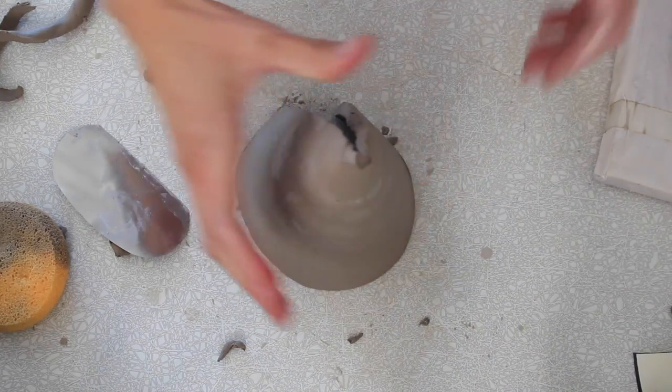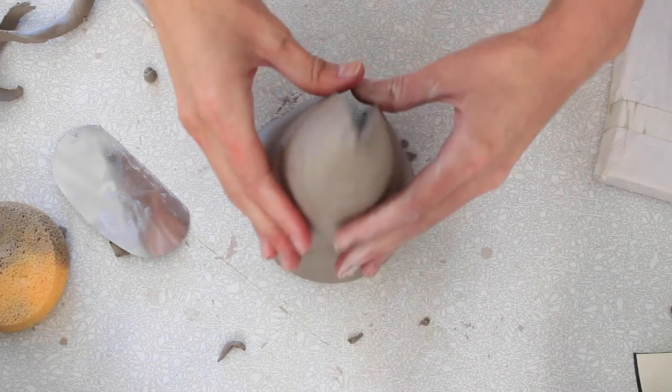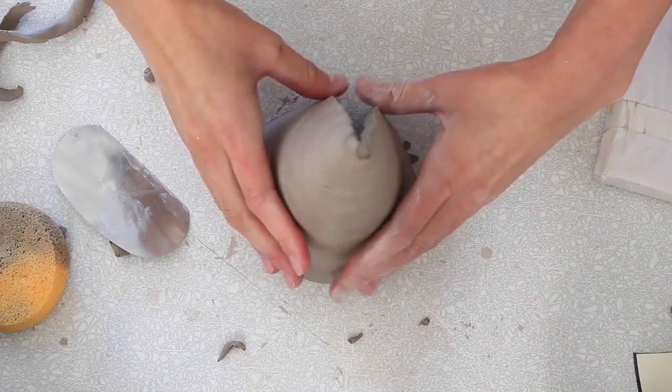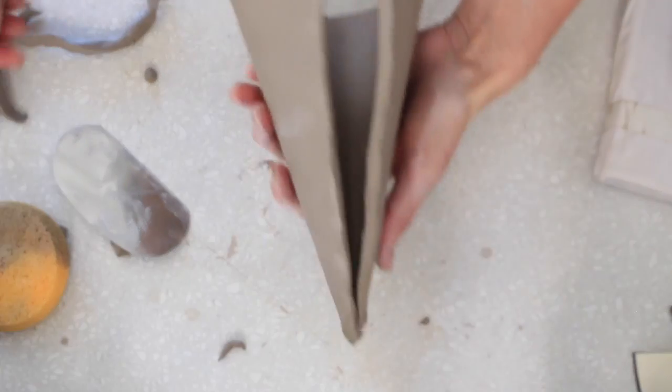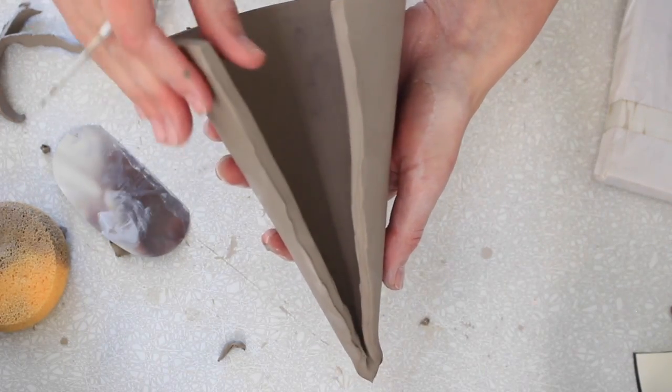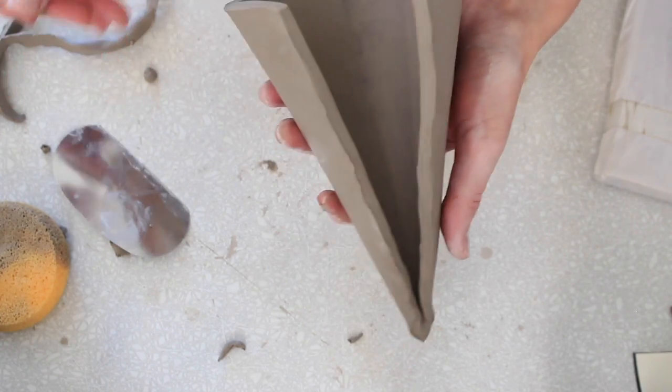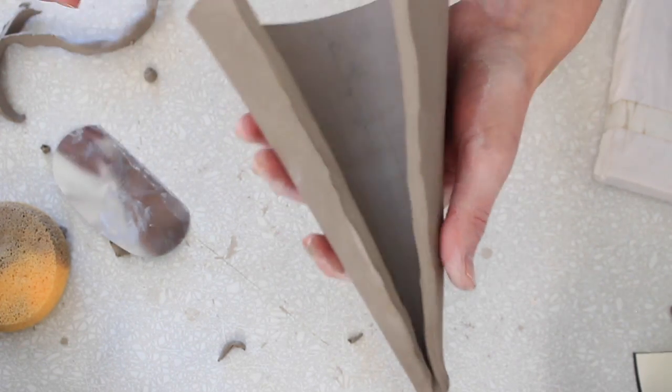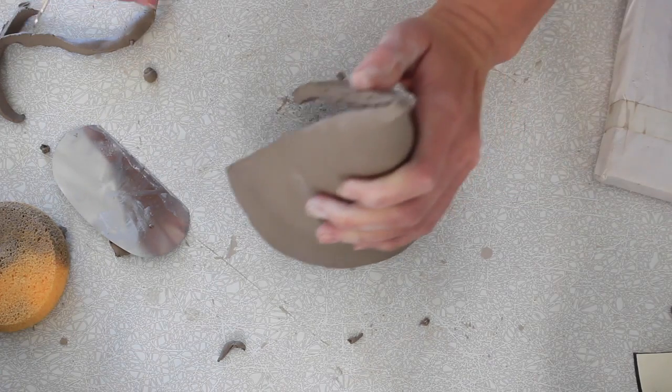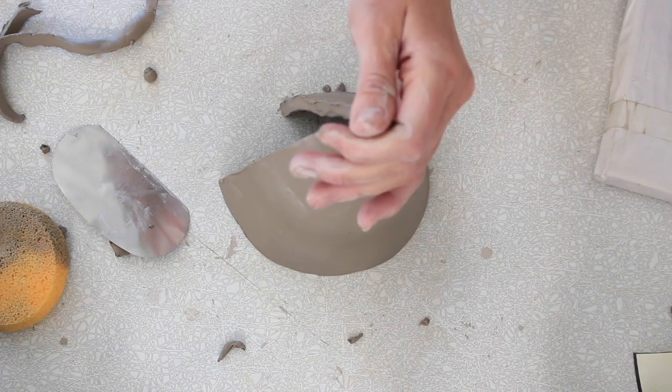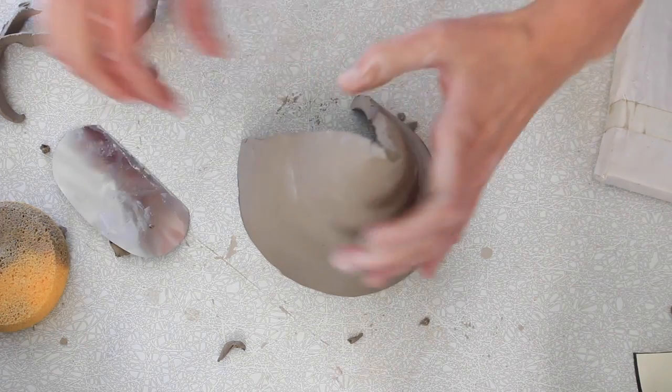Back to my cone that I've created for my body. I'm going to need to slip and score this together. Make sure that it's leather hard. If I can move it really easily, this is still plastic. If I can't move it that easily, then it's leather hard. But if I can move it like this, it's still plastic and you want to wait another 10 minutes. You can also take a hairdryer and you can dry it so that it can get leather hard faster.